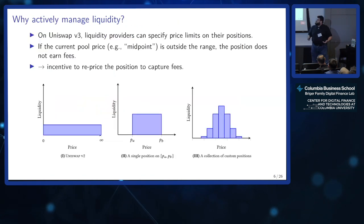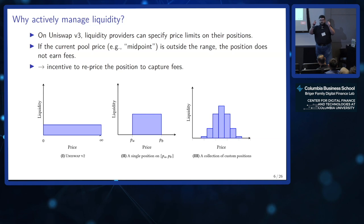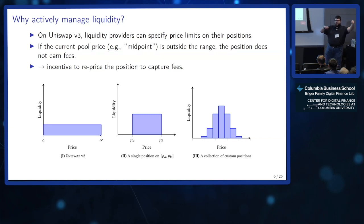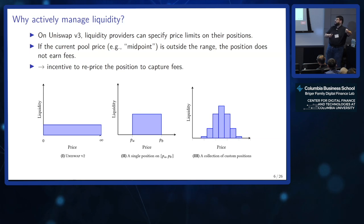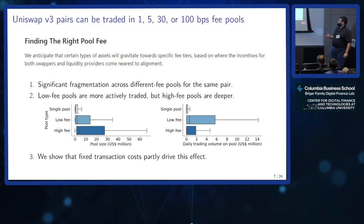Why would you need to actively manage liquidity? Because Uniswap V3 allows you to set the price range within which you're willing to trade. When news happens and the true fundamental value moves out of that range, you want to move your liquidity position — otherwise you're not earning any fees. So active management is more core to V3 than it was in V2.